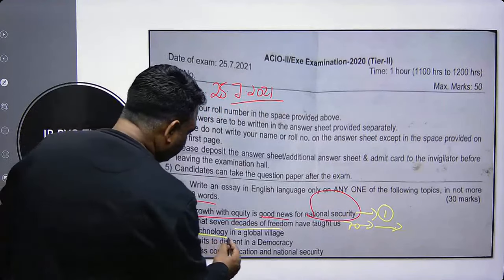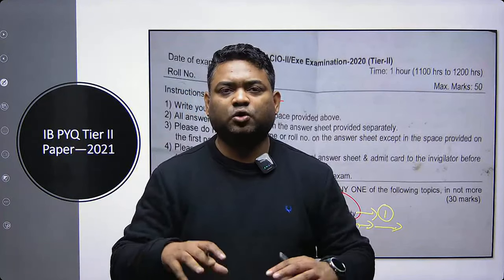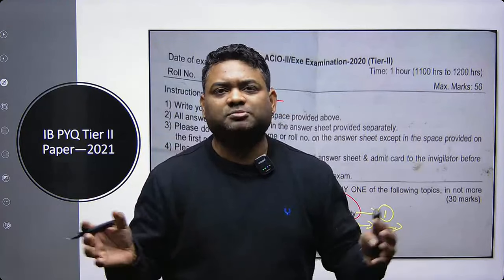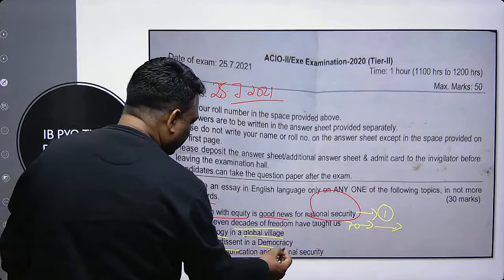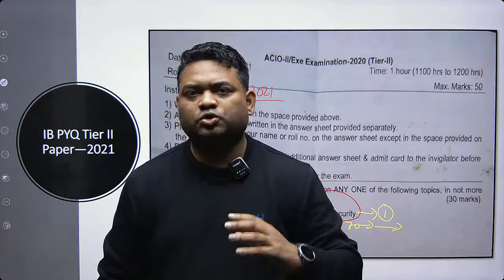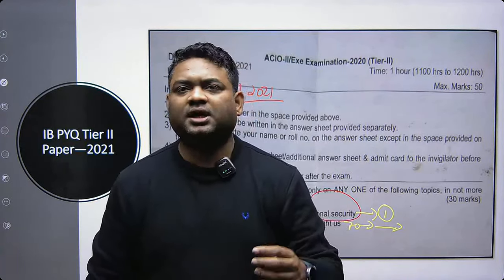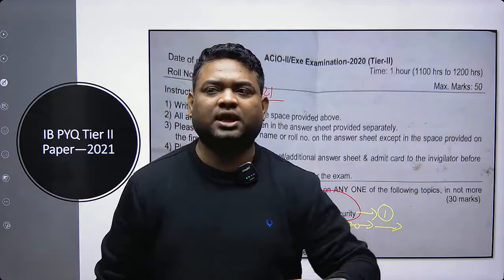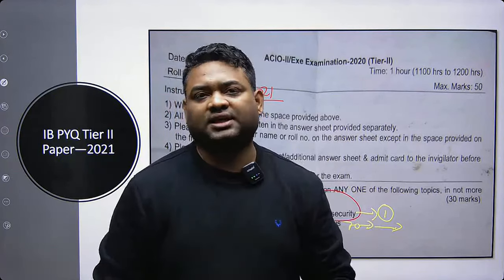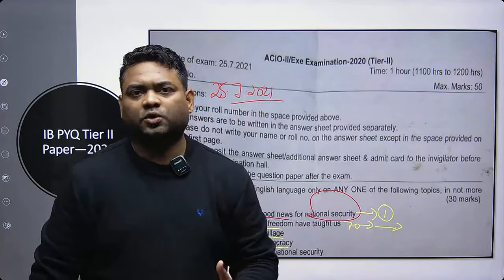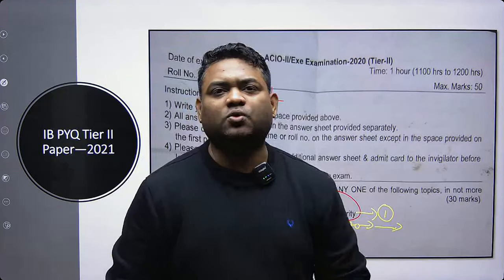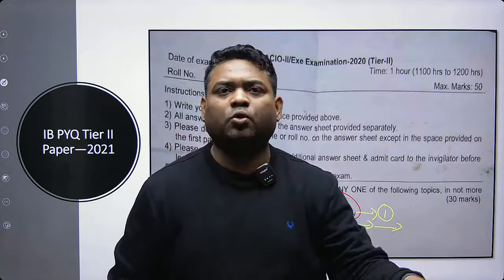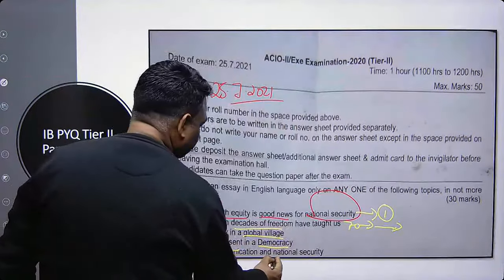Technology — how we are connected today from Meta to Facebook to WhatsApp, how technology is binding, and its pros and cons. 'Limits to dissent in democracy' — for example, if there are judges with a majority decision, there should still be room for dissent in democracy. Last topic: 'Mass Communication and National Security.'